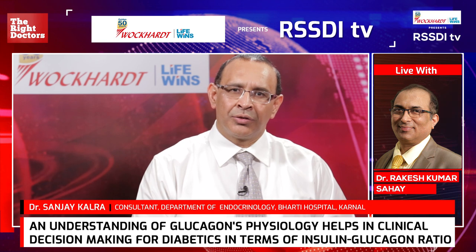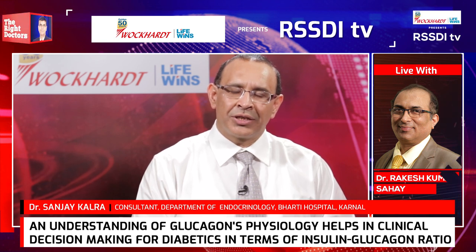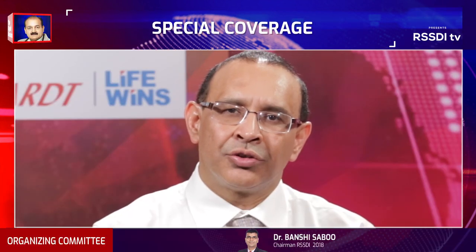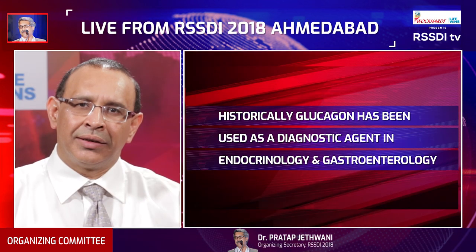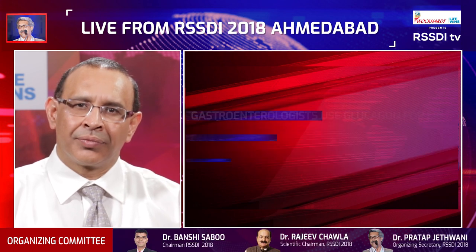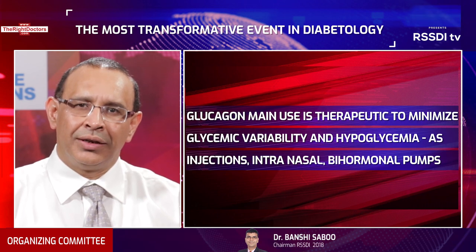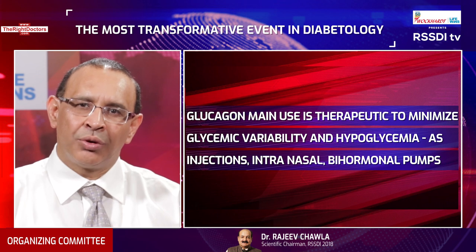What will be your key take-home message to all practitioner diabetologists and endocrinologists regarding viewing glucagon from the perspective of a diagnostic and therapeutic agent in diabetes? We should be aware that injection glucagon is a life-saving drug, especially for people with type 1 diabetes who develop hypoglycemia. Ideally, glucagon should be available in every hospital, in every healthcare setting, in every public care setting — it should be part of every emergency kit. Every person who lives with type 1 diabetes, especially children and adolescents, should have glucagon handy, and their family members should know how to administer it in times of severe hypoglycemia.